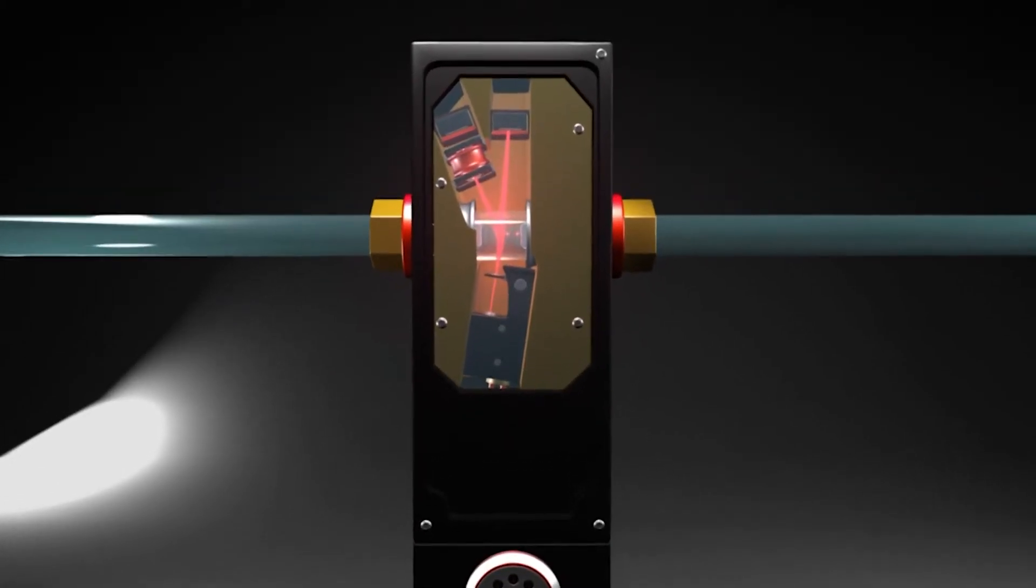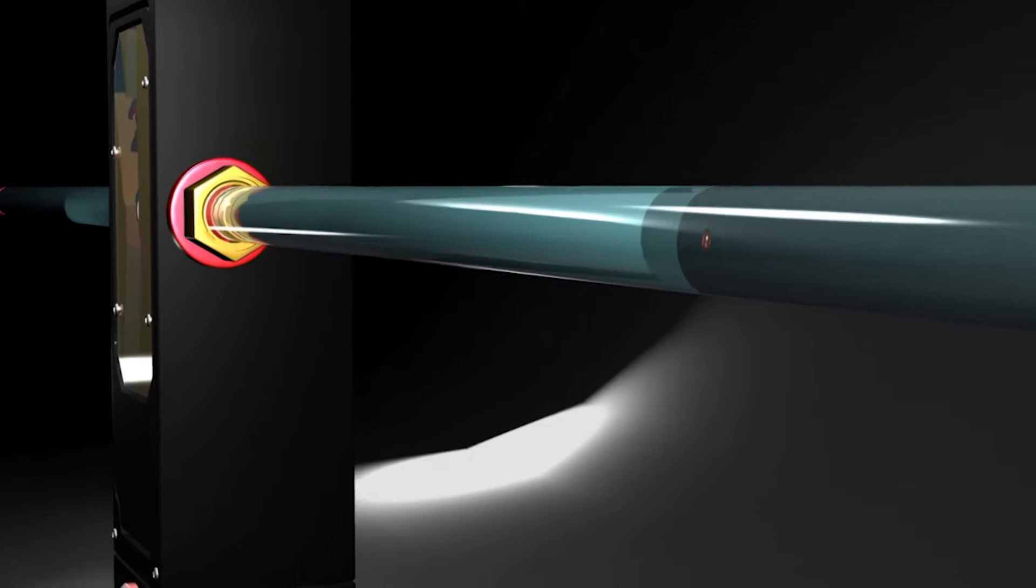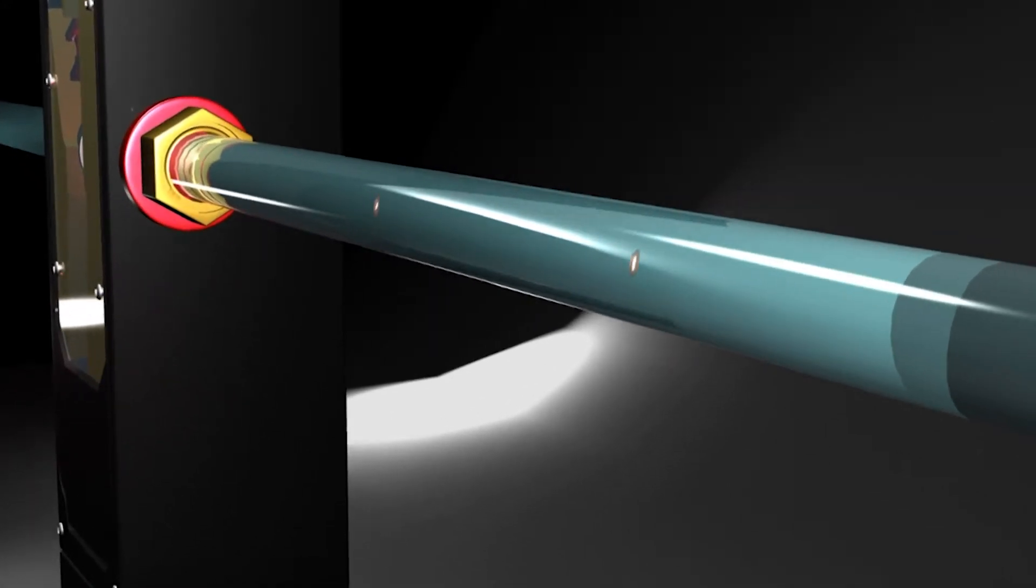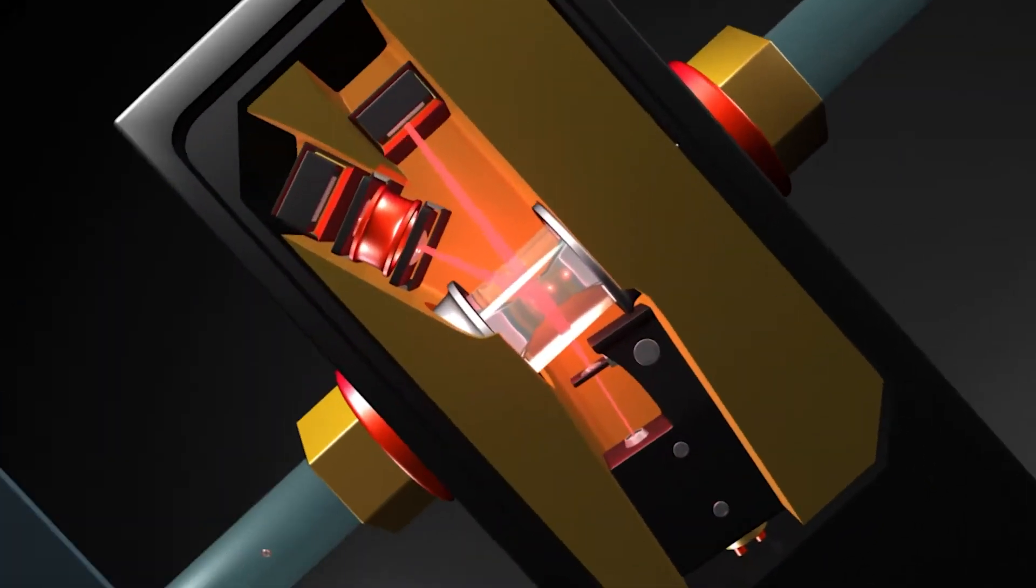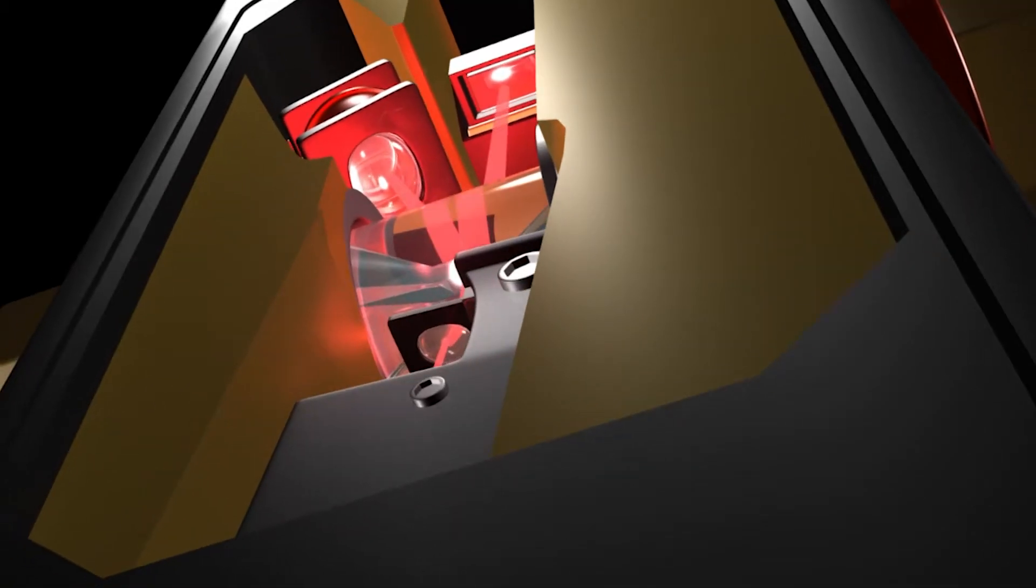The AccuSizer is based on the technique of single particle optical sizing, or SPOS. As particles in a liquid suspension pass one at a time through a sensor, they both block and scatter the incident laser light.